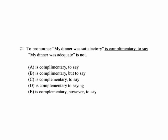Number 21. 'To pronounce my dinner was satisfactory is complimentary. To say my dinner was adequate is not.' The first issue is that we have two independent clauses here. Without a coordinating conjunction, you have to have a semicolon to separate the two independent clauses. We don't have that, and we're not offered it in A.